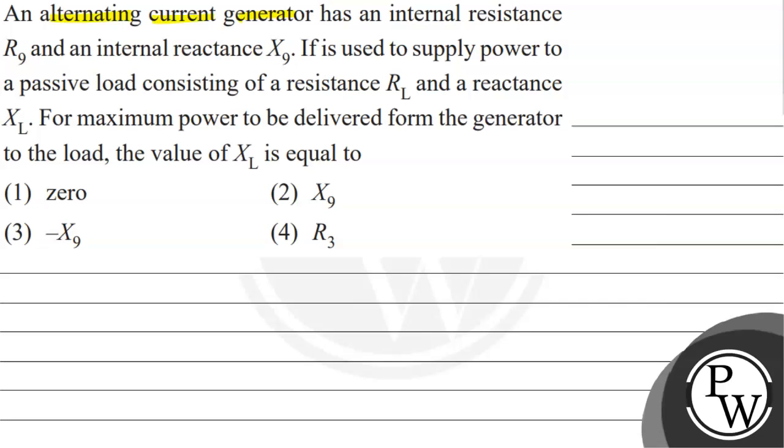An alternating current generator has an internal resistance Rg and an internal reactance Xg. It is used to supply power to a passive load consisting of a resistance Rl and a reactance Xl. For maximum power to be delivered from the generator to the load, the value of Xl is equal to: option 1 is zero, option 2 is Xg, option 3 is minus Xg, and option 4 is R3.